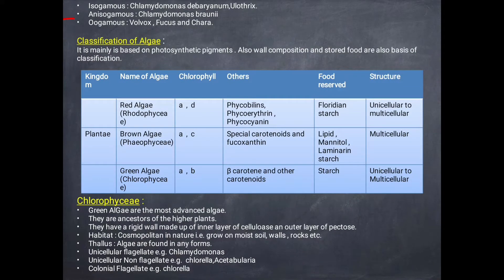Examples of isogamous algae are Chlamydomonas, Spirogyra, and Ulothrix. Anisogamous are Chlamydomonas and Volvox, and oogamous are Volvox, Fucus, and Chara. The classification of algae is based on pigments and stored food.